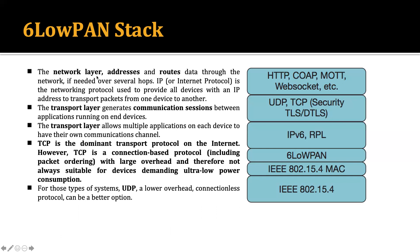The network layer addresses and routes data through the network, if needed over several hops. IP — Internet Protocol — is the networking protocol used to provide all devices with an IP address and to transport packets from one device to another. In 6LoWPAN, IPv6 is used at the network layer.